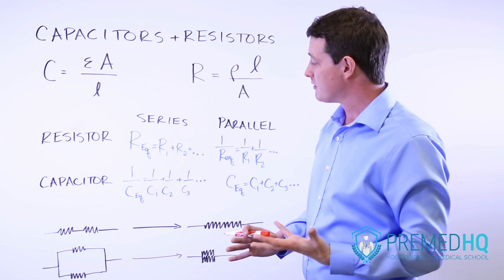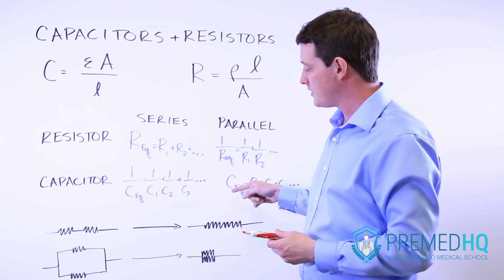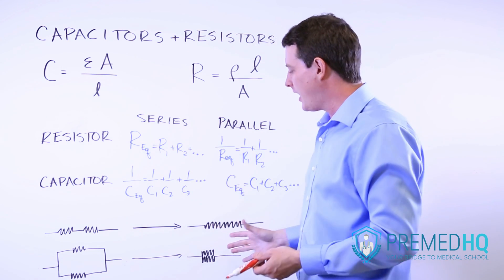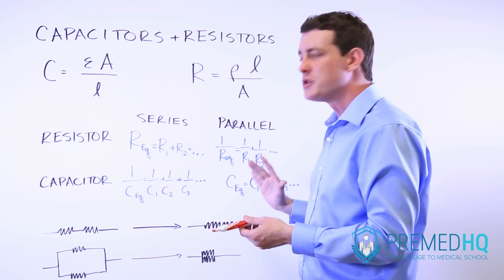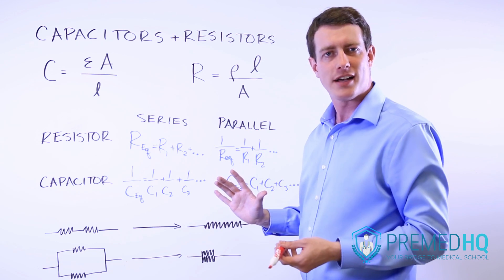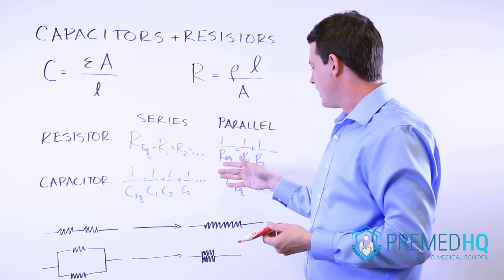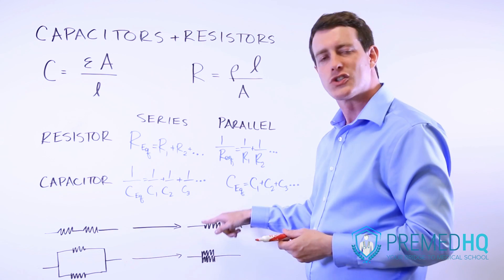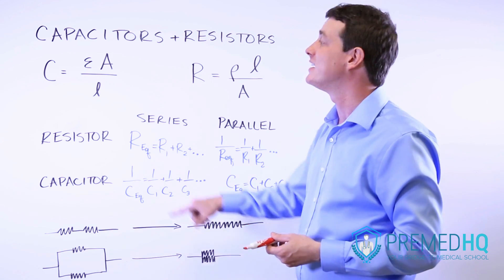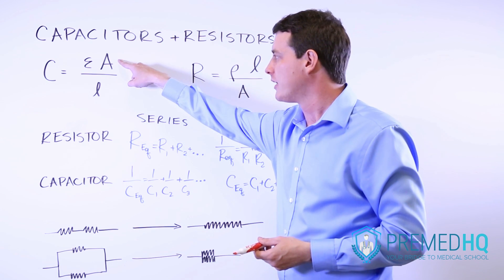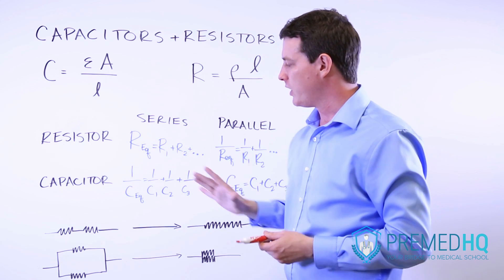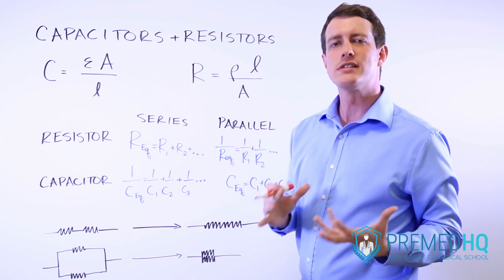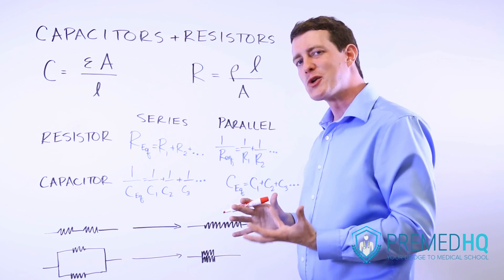Capacitors follow the opposite rules. When you have capacitors in series, you're increasing the length between the plates, and that is problematic because it reduces the overall capacitance. But capacitors in parallel add together because you're increasing the surface area of those capacitor plates, and increasing area with no change in length is going to increase the ability of that capacitor to store charge.